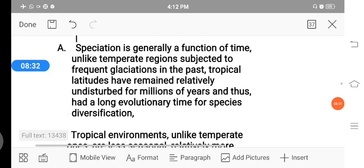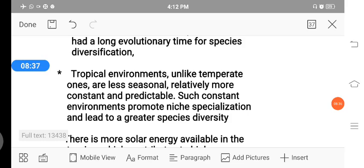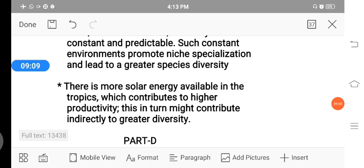Next is, tropical environments unlike temperate ones are less seasonal, relatively more constant and predictable. Such constant environments promote niche specialization and lead to greater species diversity. The temperate regions are constant, predictable temperature as well as less seasonal. Due to this, greater species diversity we are going to see. Next is, there is more solar energy available in the tropical region which contributes to higher productivity. This might contribute indirectly to greater diversity. In the tropical region, there is availability of solar energy. Sunlight is more, so the plants are able to grow more and increase productivity. So indirectly we see greater diversity.